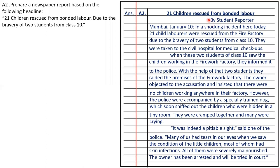Then write by student reporter. Place and date: Mumbai, January 10. In a shocking incident here today, 21 child labourers were rescued from a firework factory due to the bravery of two class 10 students. They were taken to the civil hospital for medical check-ups. When these two students saw the children working in the firework factory, they informed the police. With their help, police raided the premises. The owner objected and insisted there were no children working in the factory. However, the police were accompanied by a specially trained dog which sniffed out the children hidden in a tiny room.